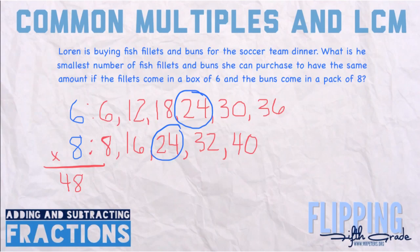Going back to the question: if the fillets come in a box of 6, Lauren needs to buy 4 boxes of fillets. If the buns come in a pack of 8, she needs to buy 3 packs of buns. Then Lauren could have the same amount of both. That is how you use common multiples and the LCM to find answers to problems like this.